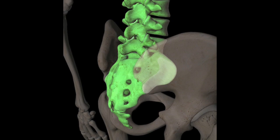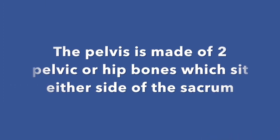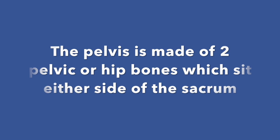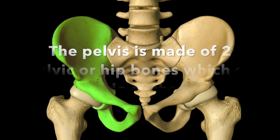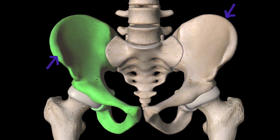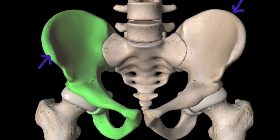The pelvis is made of two pelvic or hip bones which sit either side of the sacrum. You can see here one pelvic bone highlighted, and you can see how it connects to the sacrum. You can see the two pelvic bones and that very intrinsic connection to the sacrum, and how the sacrum once again continues up into the spine.